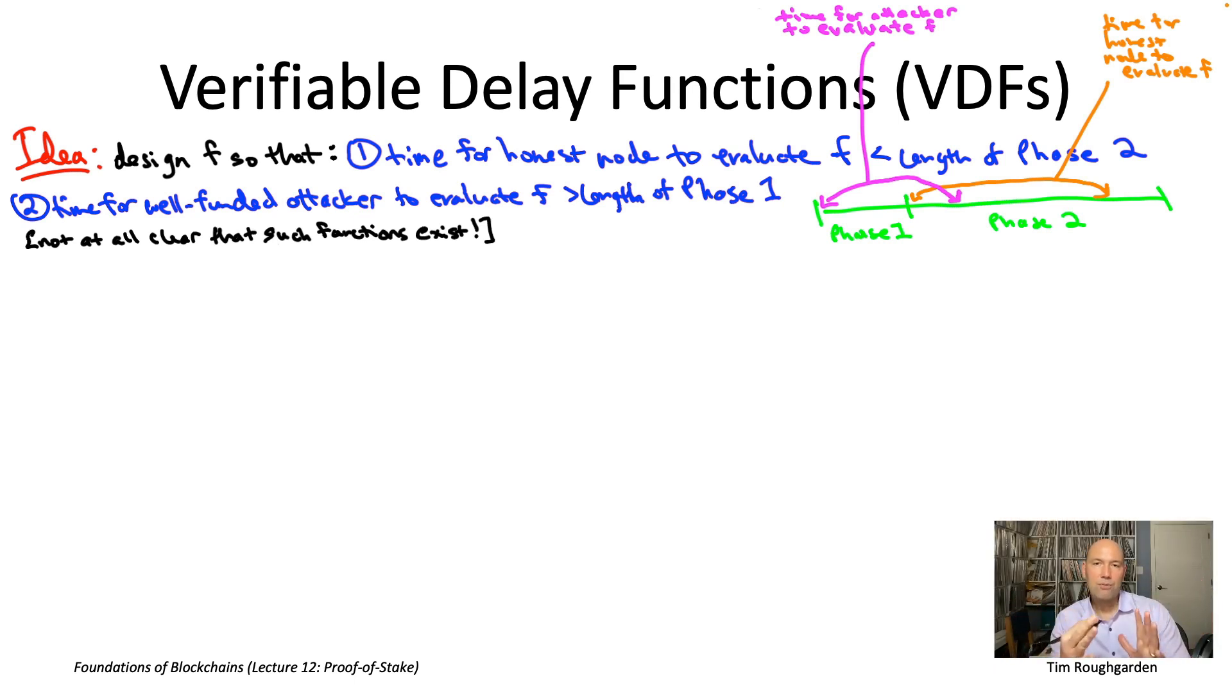And in particular, we need to take the duration of phase one, that's the phase in which everybody's reporting their r sub i's, we need to take the duration of phase one to be less than the amount of time it's going to take a well-funded attacker to evaluate little f.